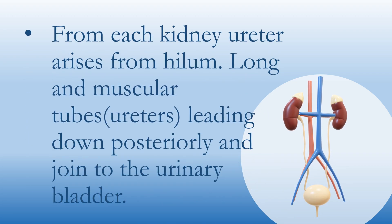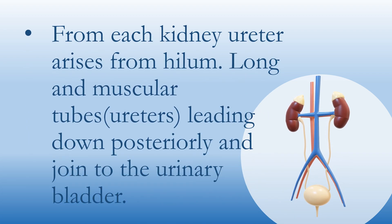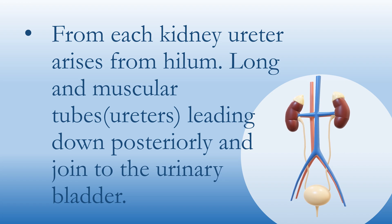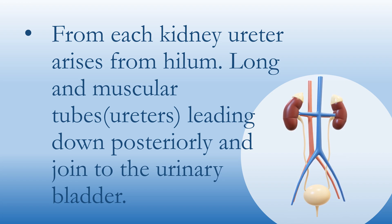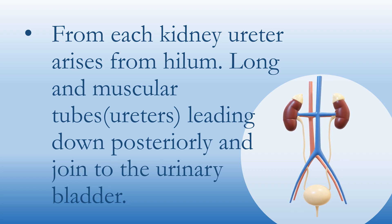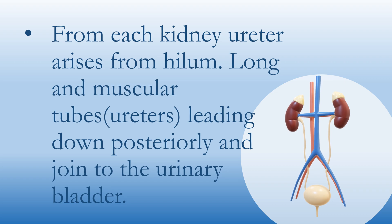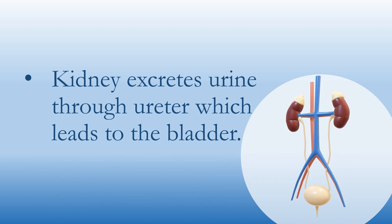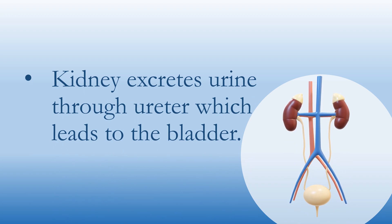From each kidney, a ureter arises from the hilum — a long and muscular tube. The ureters lead down posteriorly and join the urinary bladder. Each kidney sends urine through the ureter, which leads to the bladder.